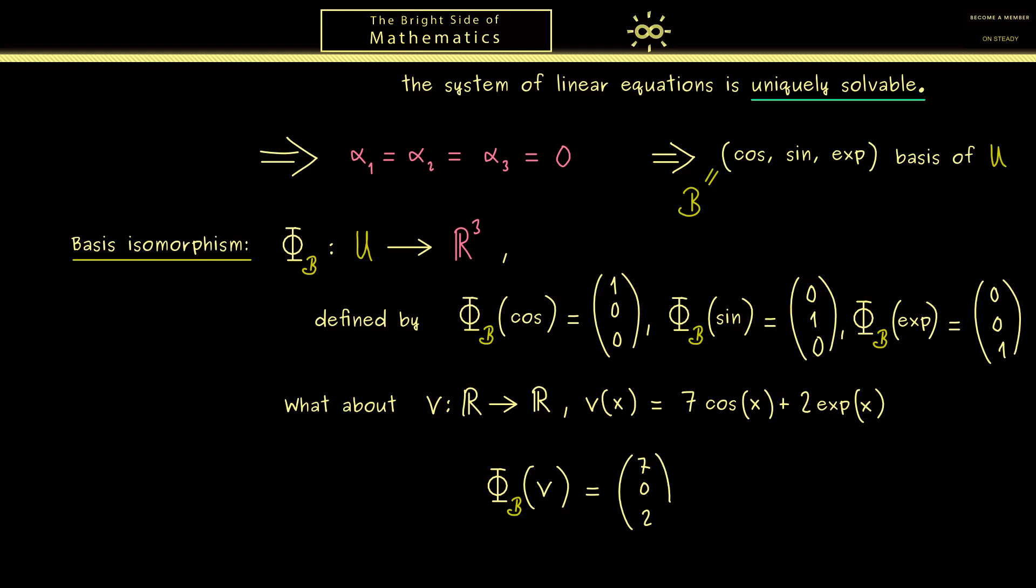Now in fact, this vector carries the same information as this function V. So this is the idea of the basis isomorphism, and now we can see it with this example. So instead of dealing with a lot of functions and a lot of calculations with functions, we can just calculate with vectors in R³ again. There we already know what to do, and we don't lose any information. Hence the important thing you should remember here is the sentence that the space U is completely represented by R³. And this is given by the power of the basis isomorphism.